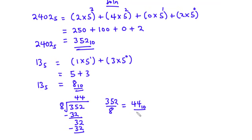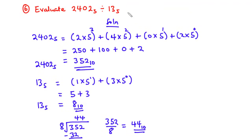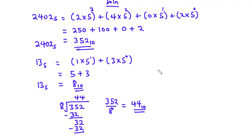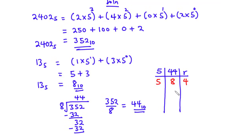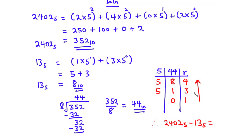Don't forget that this value is in base 10. Now, we need to convert this value back to base 5. To do that, we are going to create a table with the base, the decimal value, and the remainder. How many times does 5 go into 44? 5 goes into 44 eight times. 5 times 8 is 40. 44 minus 40 is 4. 5 goes into 8 only once. 5 times 1 is 5. 8 minus 5 is 3. 5 goes into 1 zero times, remainder 1. Therefore, reading from bottom to top, 2402 base 5 divided by 13 base 5 is equal to 134 base 5.